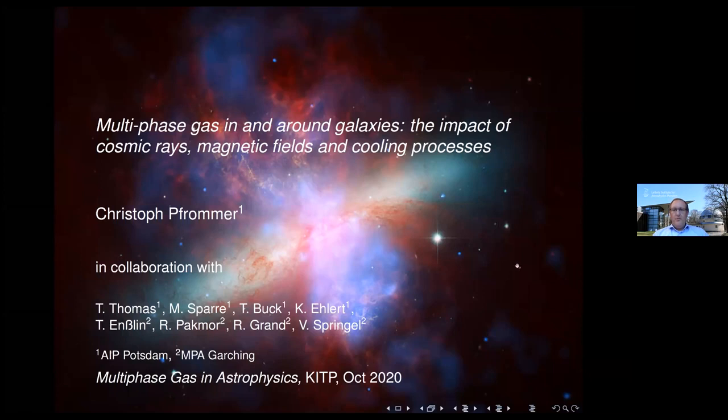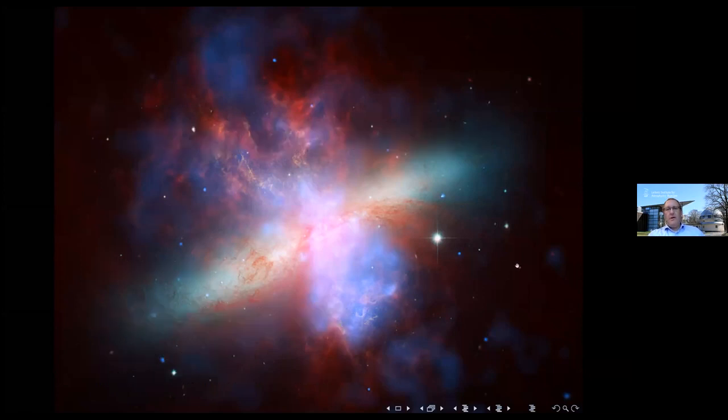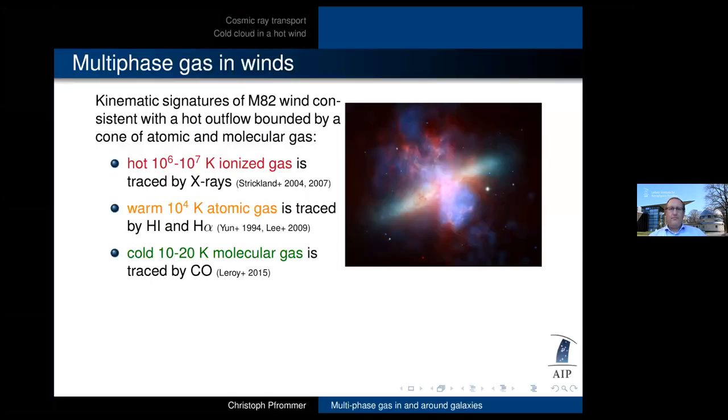And of course, we all know this galaxy, M51, which is basically the poster child starburst galaxy where we can directly observe the multiphase nature of the outflows of galaxies. And of course, number one question, how on earth do you make such a galaxy? Now the kinematic signatures of M82 of the wind in M82 is consistent with a hot outflow bounded by a cone of atomic and molecular gas. So the hot gas 10 to the 6 to 10 to the 7 K ionized gas is traced by x-rays. The warm 10 to the 4 K atomic gas is traced by H1 and H alpha and the cold 10 to 20 K molecular gas is traced by carbon oxygen.